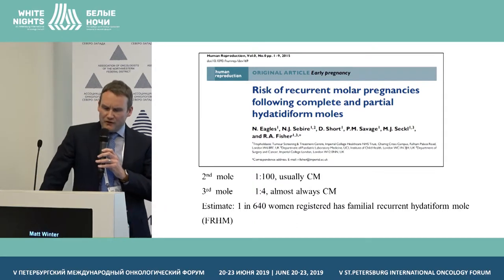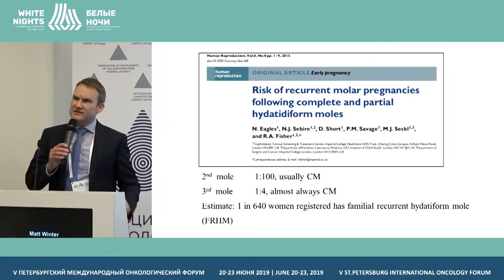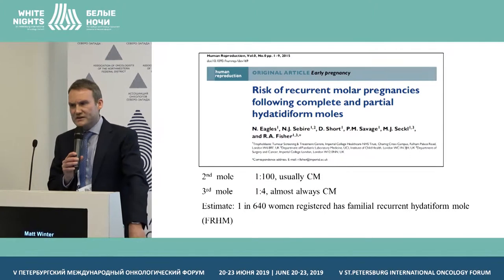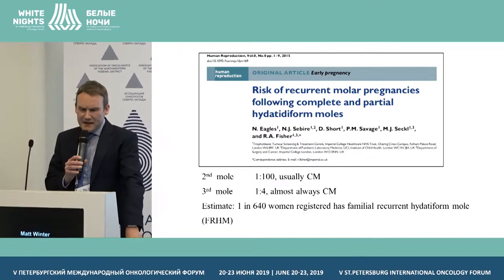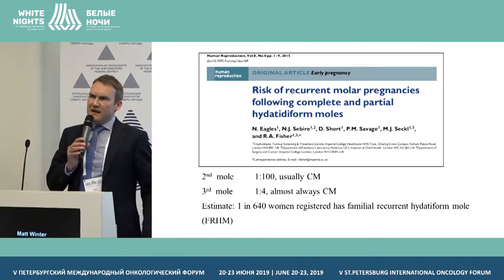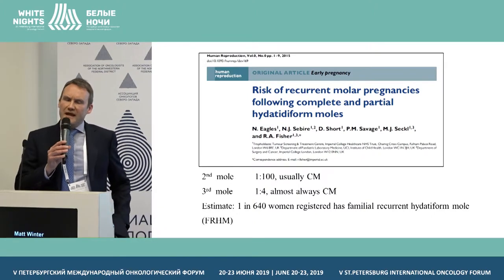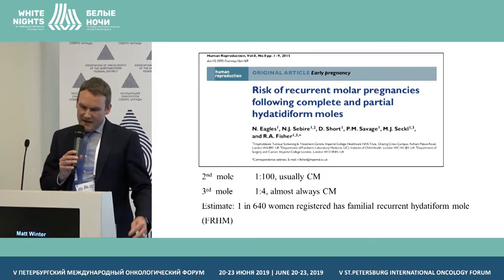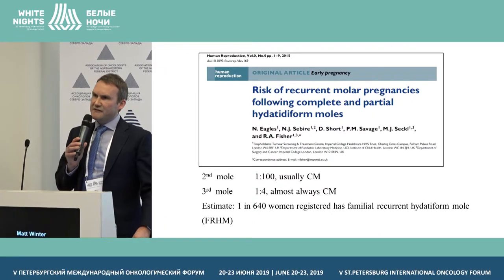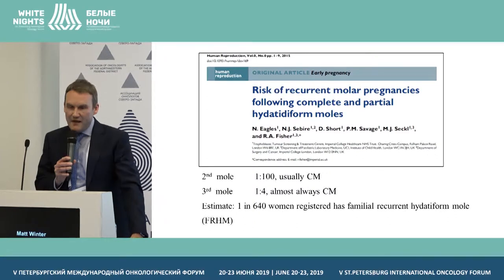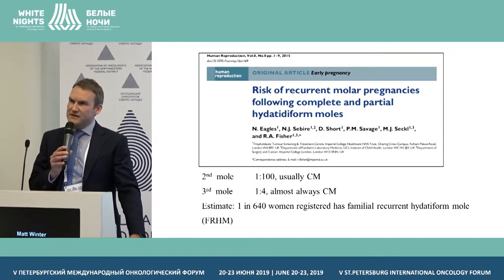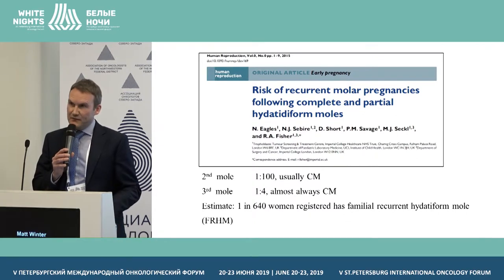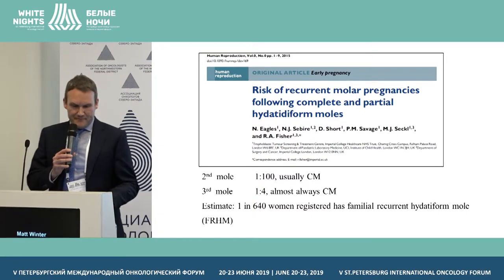This paper also showed that approximately 1 in 640 women registered had a condition called familial recurrent hydatiform mole. This is important — we should be thinking about genotyping molar tissue in women who have had three or more complete moles, because they may have this condition. If they want to consider a future pregnancy, they will have to have IVF with embryo donation to achieve a successful pregnancy, as they will not be able to do that alone.